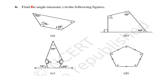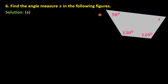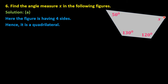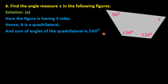Let me solve question number six: find the angle measure x in the following figures. There are four figures given, each with an unknown variable x. Starting with question 6a, the figure has four sides, so it is a quadrilateral. In a quadrilateral, the sum of all angles is 360 degrees, so we can find x using the angle sum property.